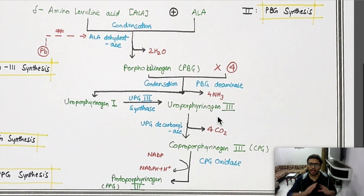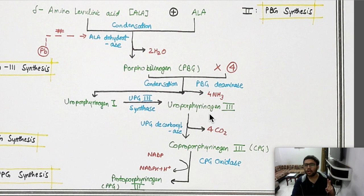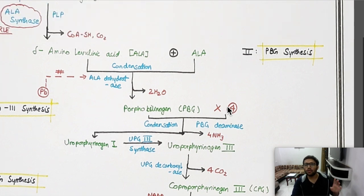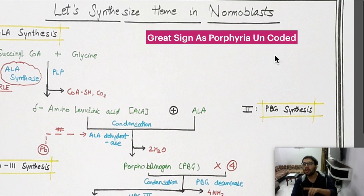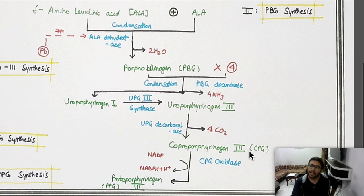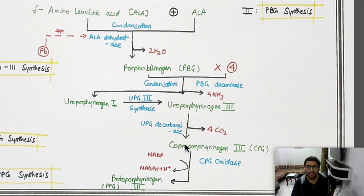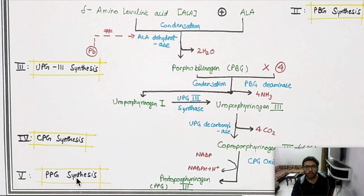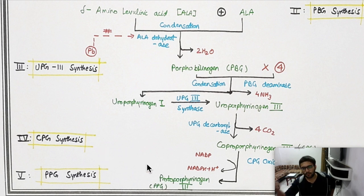After uroporphyrinogen, you no longer condense — instead you perform decarboxylation and oxidation. First, uroporphyrinogen undergoes decarboxylation: remove CO2 using the enzyme UPG decarboxylase to form coproporphyrinogen type 3. Everything related to the C-type step follows together. Then oxidize coproporphyrinogen to protoporphyrinogen.